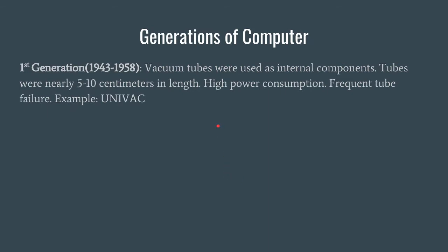Now we take a look at the generations of the computer. The computers used long ago were composed of vacuum tubes, which were used as the internal components. This first generation is the era starting from 1943 and more or less it resumed till 1958. The building block was the vacuum tubes, but there was a very major problem with these tubes because there were frequent tube failures. Most importantly, the operation of these tubes consumed a huge amount of power and hence was a wastage of electricity. The length of these tubes was nearly five to ten centimeters.